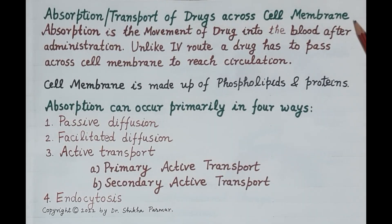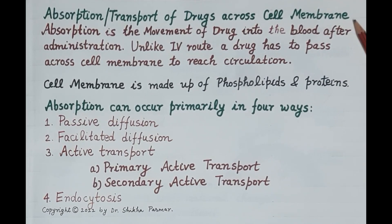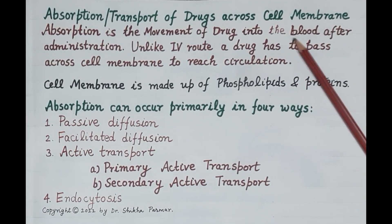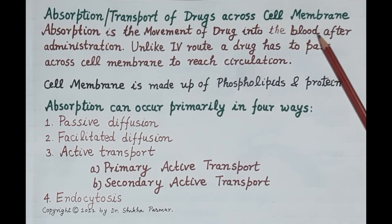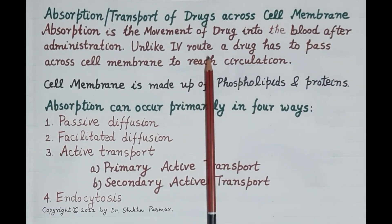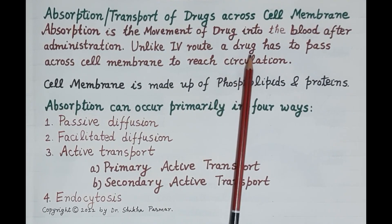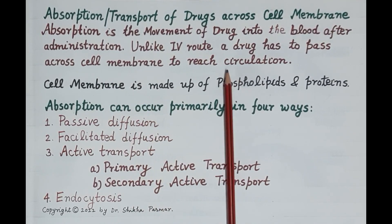Hello students. In this video we will study different ways by which a drug is absorbed or transported across the cell membrane. This video is the fifth in the series of videos on general pharmacology. Absorption is the movement of drug into the bloodstream after its administration. Unlike the intravenous route, where the drug is injected directly into the blood, a drug has to pass across the cell membrane to reach the blood circulation.